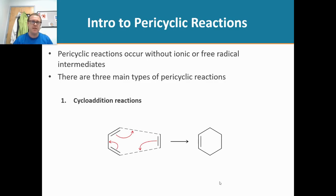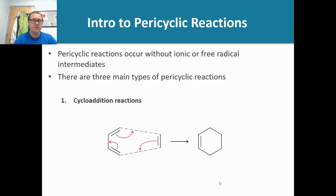The next set of reactions we're going to look into are called pericyclic reactions. I'm going to introduce three different types of these pericyclic reactions, and then after I introduce those three, we will go into much depth and look at some examples. The first point we need to understand is pericyclic reactions don't occur with ionic or free radical intermediates.